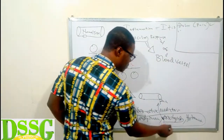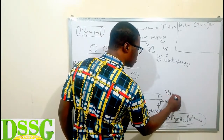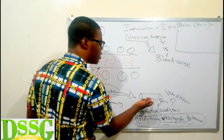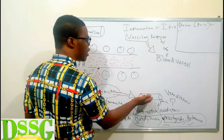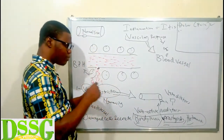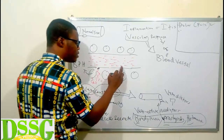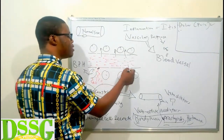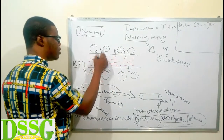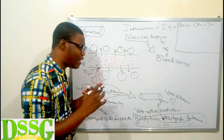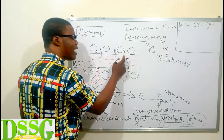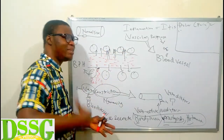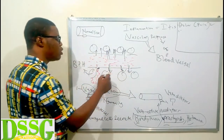The bradykinin, prostaglandin, and histamine are vasodilators — the direct opposite of vasoconstriction. Instead of the blood vessel narrowing, it is going to expand. Inside the capillary bed there are pores that allow fluids to go into the tissue space. When vasodilation occurs, these pores become larger, leading to increased capillary permeability — more fluid escapes into the tissue spaces.